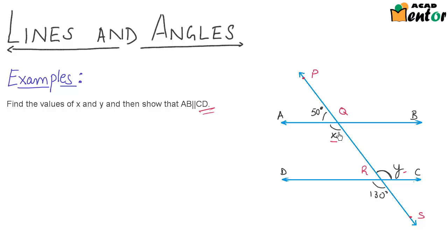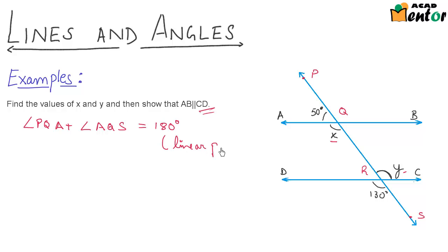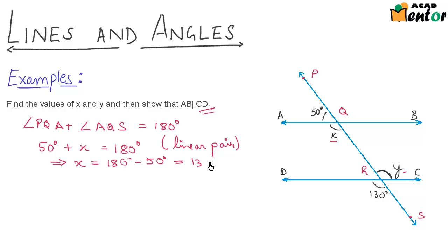Let's look at how to find the value of X. If we look at line PS and ray QA, then we see that angle PQA and angle AQS form a linear pair of angles. So that means angle PQA plus angle AQS — these two angles form a linear pair, hence they are supplementary. I know the value of angle PQA is 50 degrees and this one is given as X, equal to 180 degrees. So from here I get X equal to 180 degrees minus 50 degrees, which is 130 degrees.